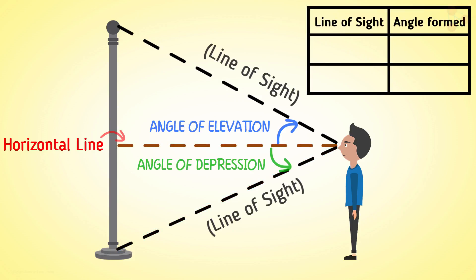So we can say that when the line of sight is above the horizontal, angle of elevation is formed. And when the line of sight is below the horizontal, angle of depression is formed.